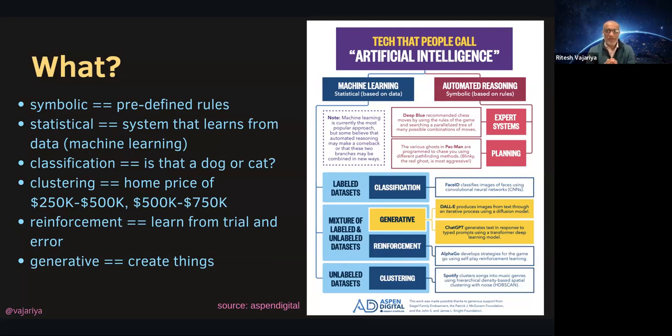That changed when we started getting into statistical-based learning. So machine learning itself, based on the previous data. And that is how we got into many mechanics. What we know today is one is called classification, where we say, this is good, this is bad. This is dog, this is cat. So that is how the classification would be done.